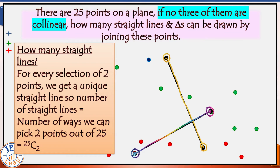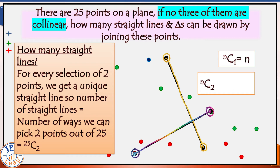Just remember: each selection of two points gives us one line. NC2 — choosing 2 out of n — is equal to n(n−1)/2. So 25C2 is equal to 25 × 24 / 2, which equals 300. Can you imagine — 300 lines can be drawn by joining any two points out of 25.